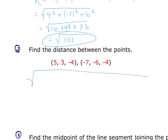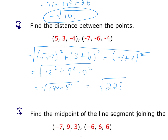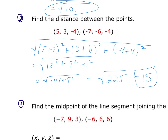Second distance example: 5 minus a negative gives +7, plus 3 minus a negative gives +6 squared, plus that last term gives 0 squared. So we have 12² + 9² + 0² = 144 + 81 = 225. The square root of 225 is 15 — a whole number.